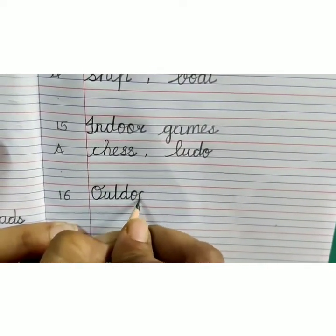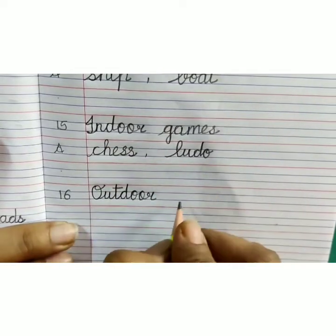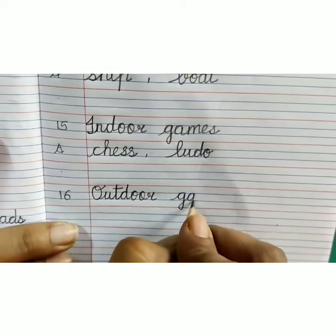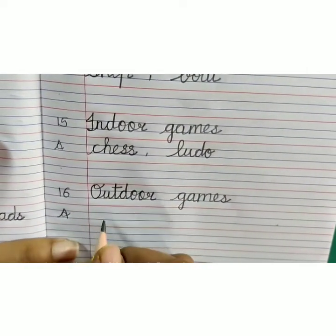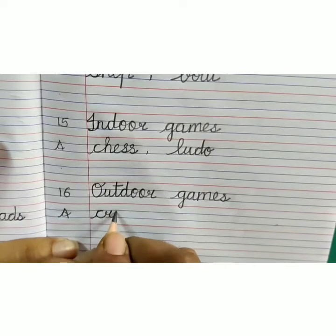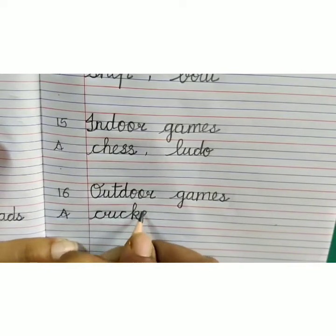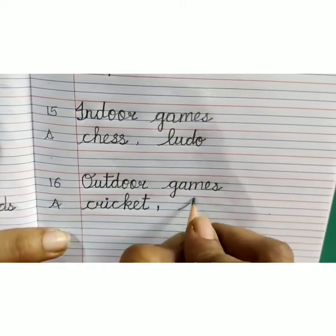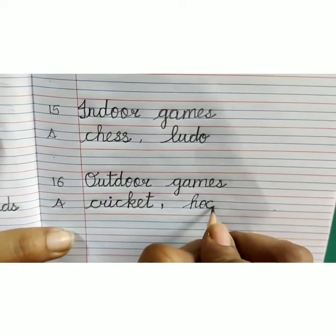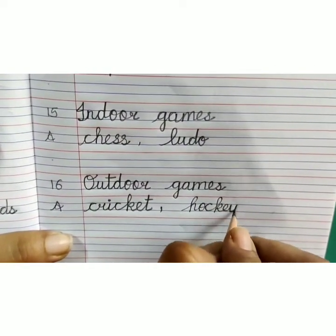Capital O-U-T, D-O-O-R, outdoor, G-A-M-E-S, games, outdoor games. Answer: C-R-I-C-K-E-T, cricket, comma, H-O-C-K-E-Y, hockey.